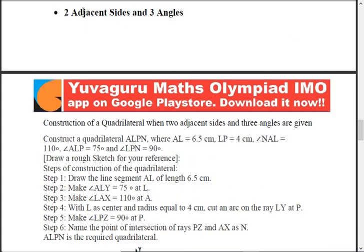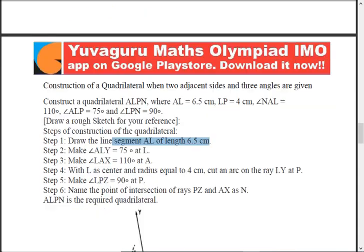Now the case where two adjacent sides and three angles are known. Adjacent means next to each other, sharing a common point. Here AL = 6.5 and LP = 4 are the two adjacent sides starting from L, and three angles — NAL, ALP, and LPN — are known. Should we start with AL or LP? From A we know angle NAL, and from L we know angle ALP, so we can start with either AL or LP.